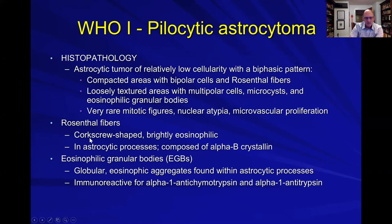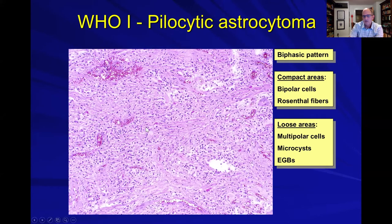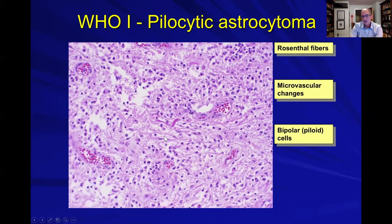The Rosenthal fibers are corkscrew-shaped eosinophilic fibers in the astrocytic processes made up of alpha-B crystallin. The eosinophilic granular bodies are aggregates in the astrocytic processes made up of alpha-1 antichymotrypsin and alpha-1 antitrypsin. Here you can see what that looks like — stepping back, you can see the biphasic pattern with the compact and loose areas, and here are those long squiggly eosinophilic Rosenthal fibers inside the astrocytic processes.